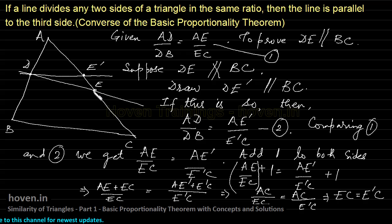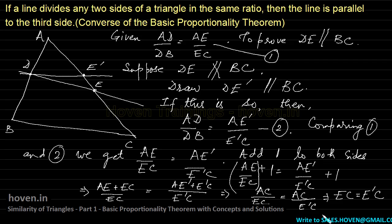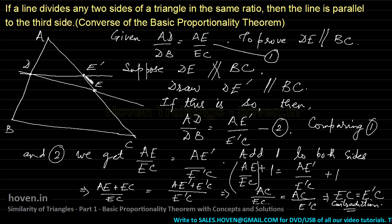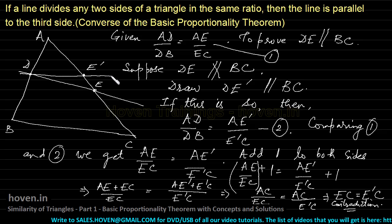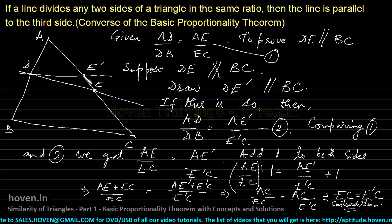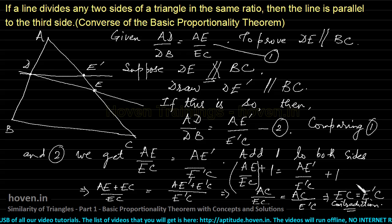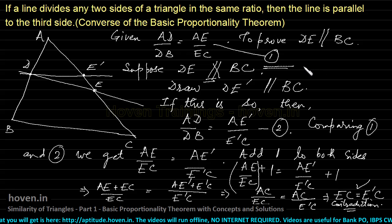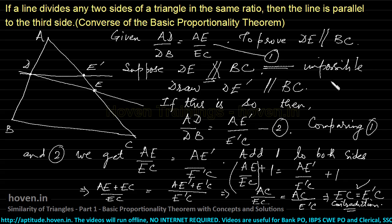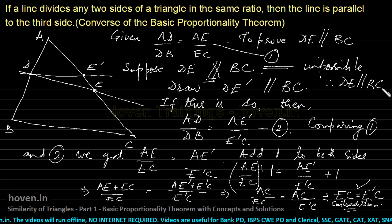EC equals E'C means E and E' should be one and the same point. But they are different — E lies on a line not parallel to the base, while E' lies on a line parallel to the base. So E'C and EC would be of different lengths, which is a contradiction. Therefore, DE has to be parallel to BC is proved.